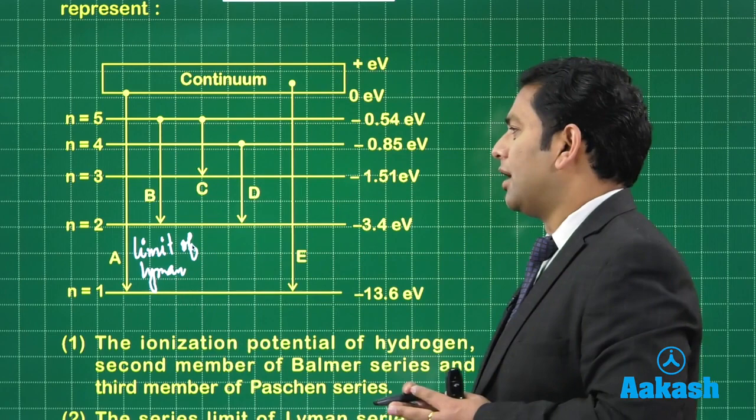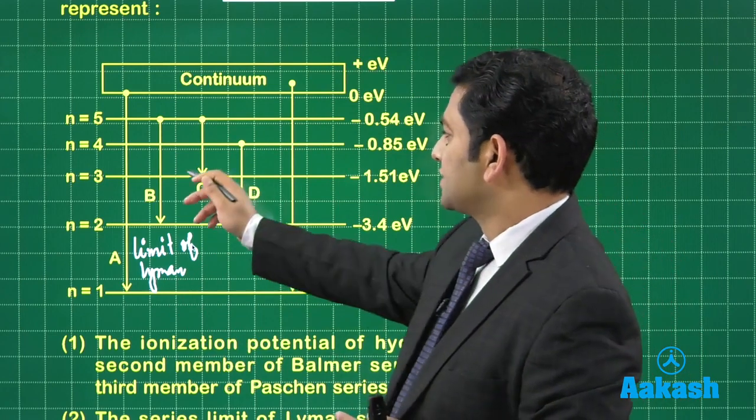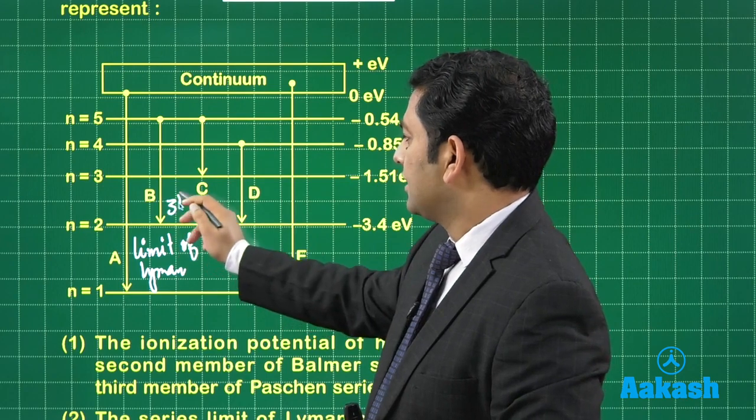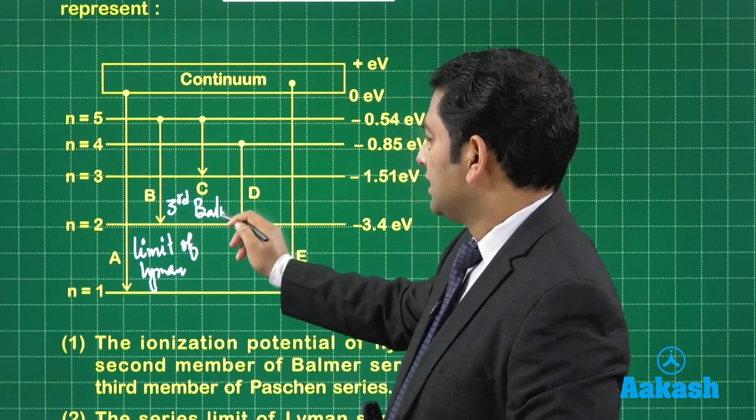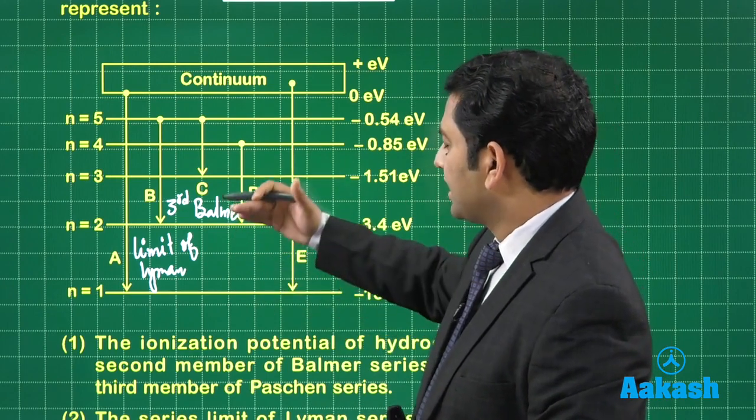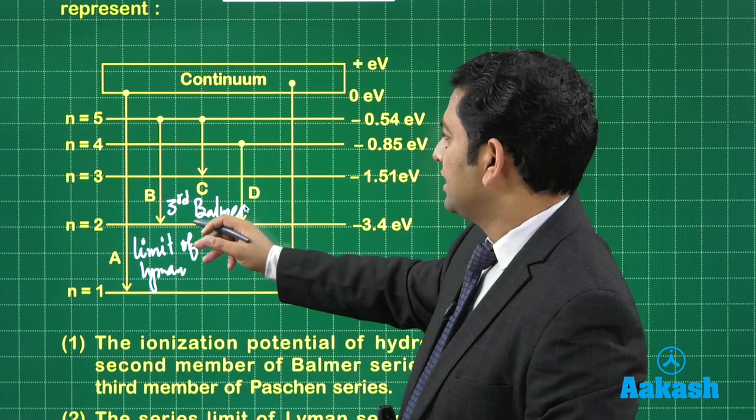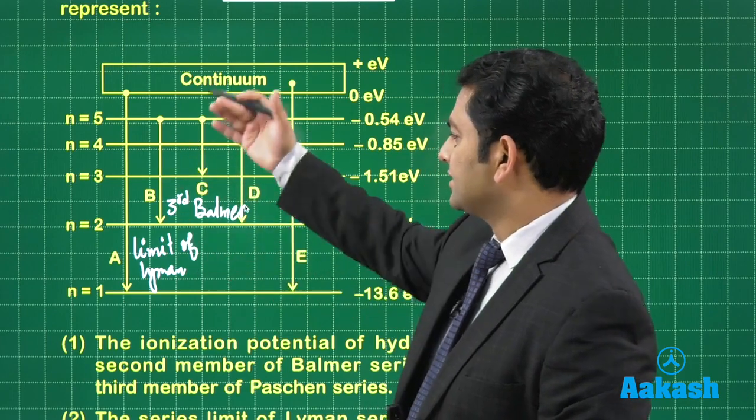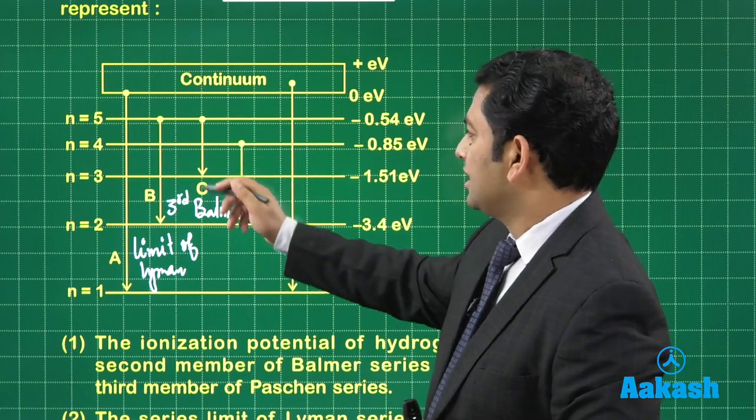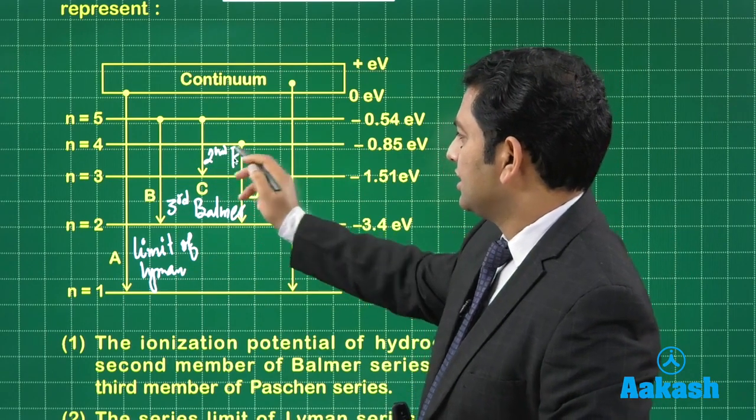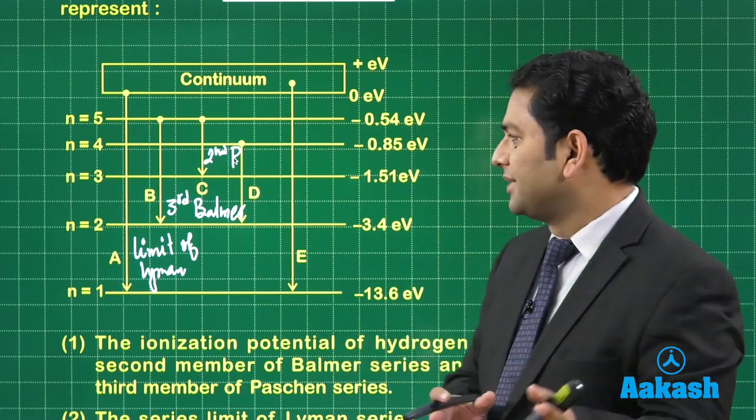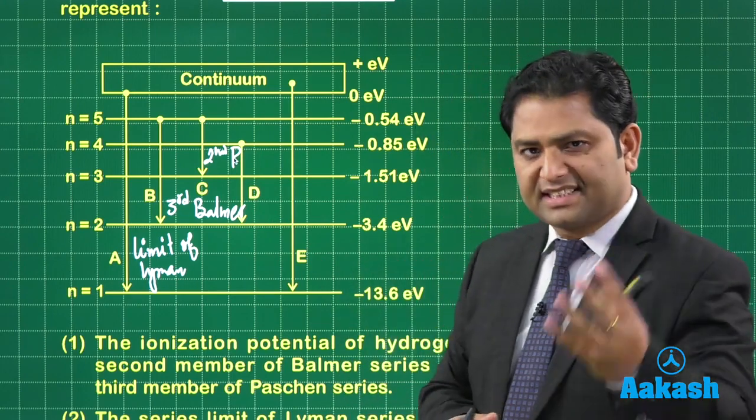What about B? B is the Balmer. Now this is first member, second member, third member. So B is the third Balmer. Because you know that for Balmer, anything begins from two. So two to three is the first member. So two to four is the second. So that's a third. What about C? C is the Paschen and this is the second Paschen.